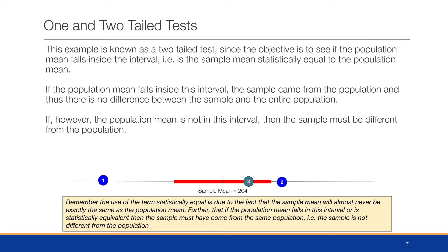This example is known as a two-tail test, since the objective is to see if the population mean falls inside the interval — that is, whether the sample mean is statistically equal to the population mean. If the population mean falls inside this interval, the sample came from that population and there is no difference between the sample and the entire population. If the population mean is not in this interval, the sample must have come from a different population. Remember, the term 'statistically equal' is used because the sample mean will almost never be exactly the same as the population mean.